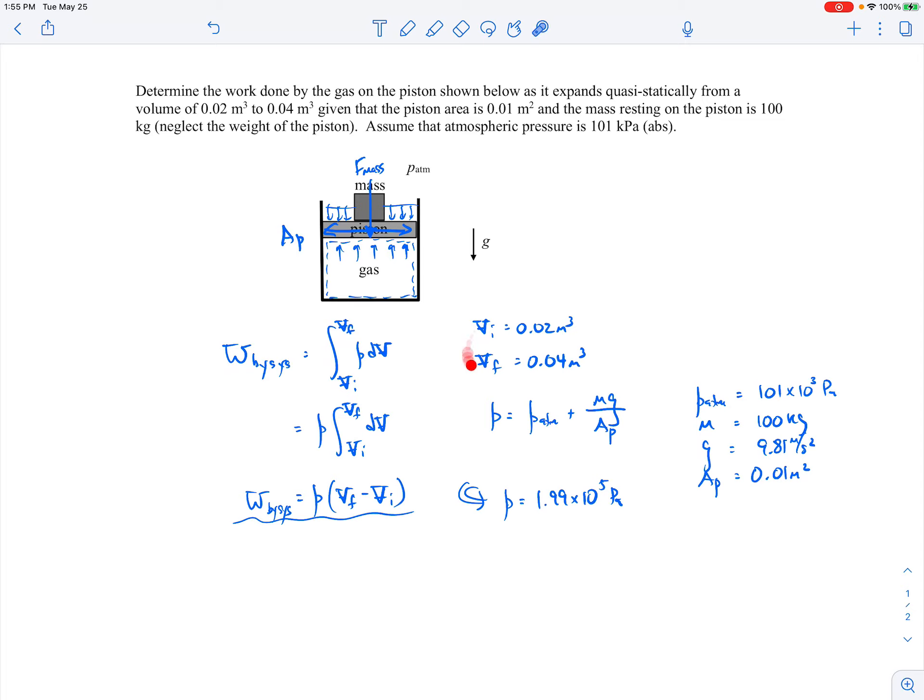So we can go ahead and plug in our values for the pressure that we just calculated and the initial and final volumes. And when all is said and done, if you plug in the numbers you'll get that the work is 3.9 kilojoules.